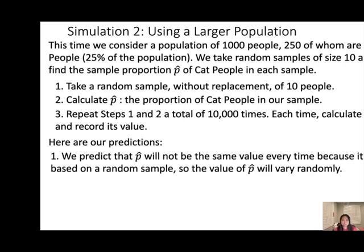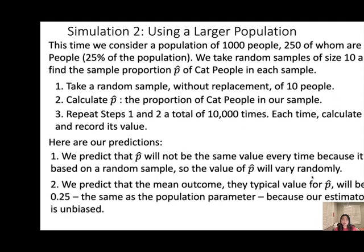This is going to be our prediction: we predict that the sample proportion will not be 25% every time, because it is based on a random sample. So the value of the sample proportion will vary randomly. But typically the sample proportion will be 0.25, because our population is 25%. We also know from Simulation 1 that the estimator is unbiased.